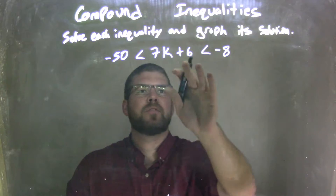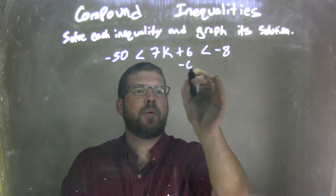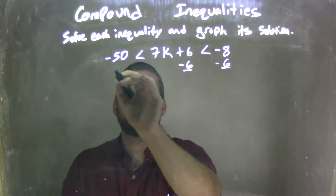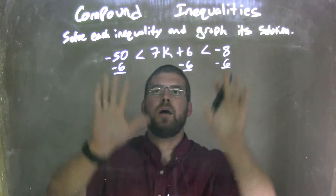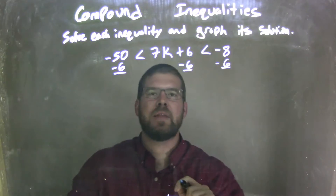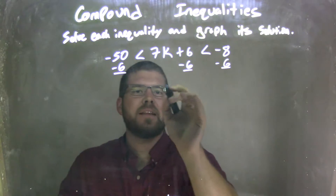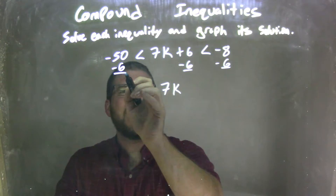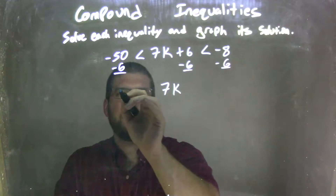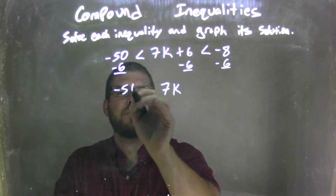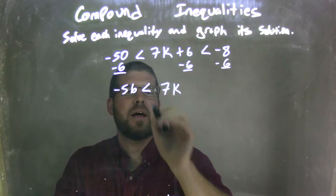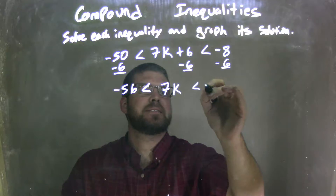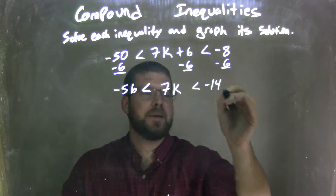First thing I'm going to do is subtract 6, and when I subtract 6, I'm going to subtract it to all parts — on the outsides as well as the inside. That leaves me with 7k in the middle, and then negative 50 minus 6 is negative 56, and that's still less than, and then less than negative 8 minus 6 is negative 14.